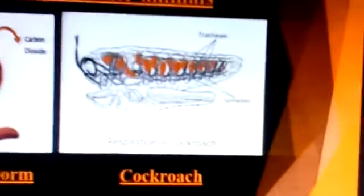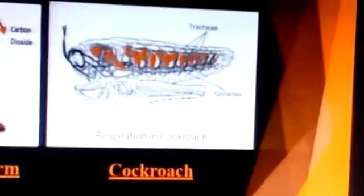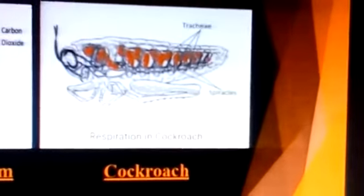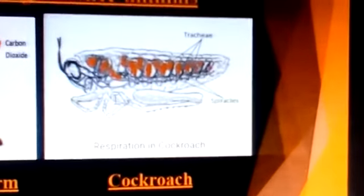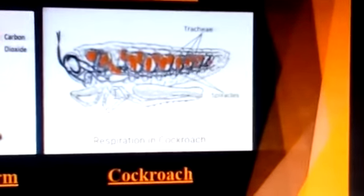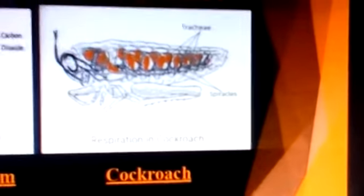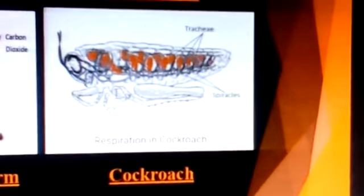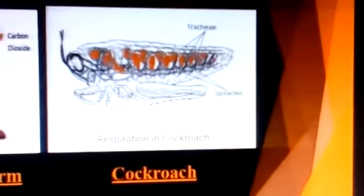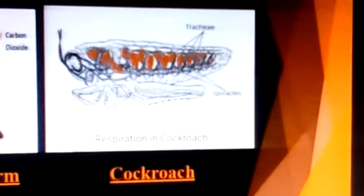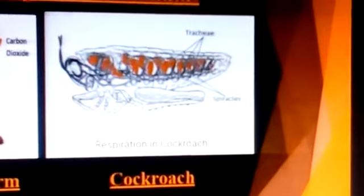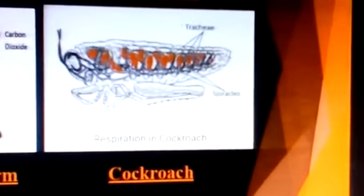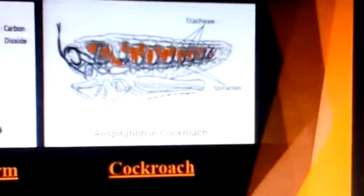Insects have a network of air tubes called trachea for gas exchange. Oxygen-rich air rushes through the spiracles into the tracheal tubes and diffuses into the body tissue, reaching every cell of the body.